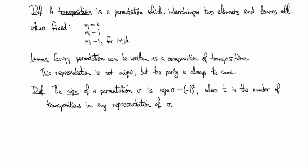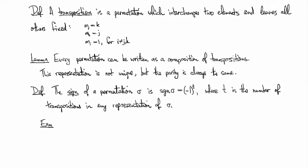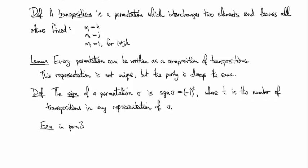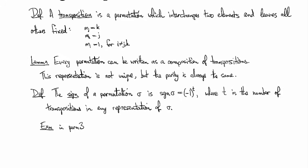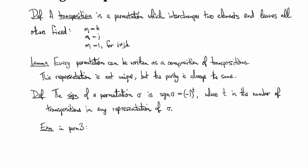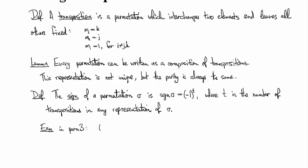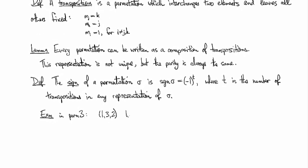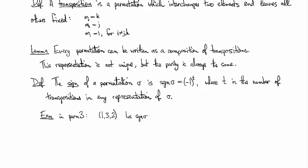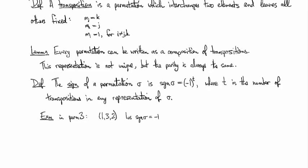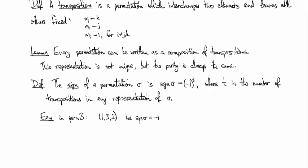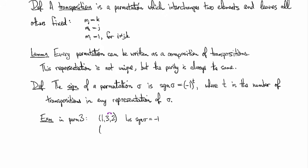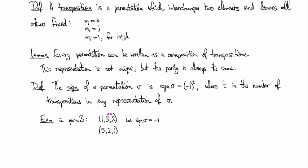Looking at some examples in the permutations on three elements, we can see that 1, 3, 2 is an example of something that has sign equal to minus one, because we've just transposed elements two and three. So that's one transposition. Another one with sign negative one: if we interchange three and one, then we get 3, 2, 1.